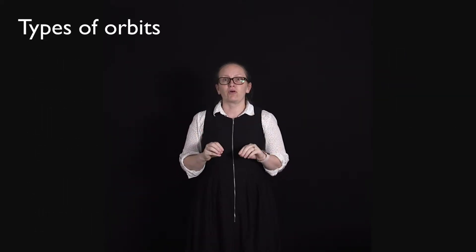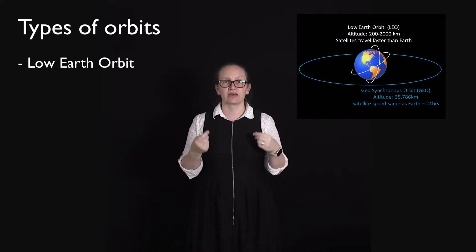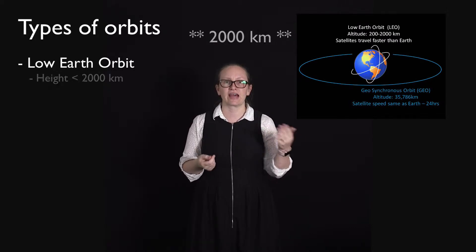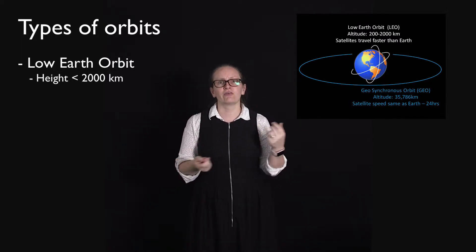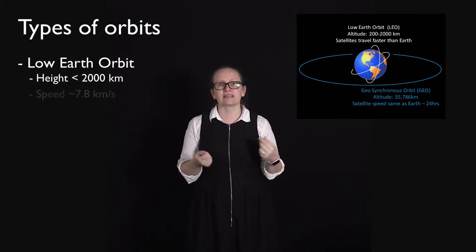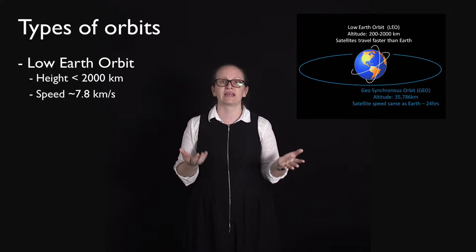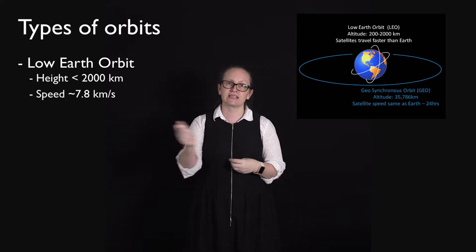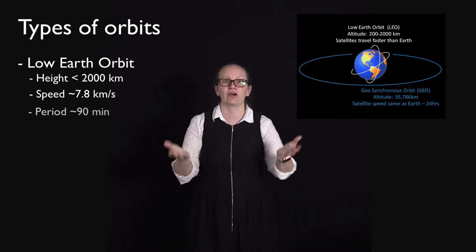Another type of orbit is the low earth orbit. In low earth orbits the satellites are found at an altitude of less than a thousand kilometers. Typical speeds for satellites in these orbits are around about 7.8 kilometers per second, which means that they take about 90 minutes to orbit the earth.